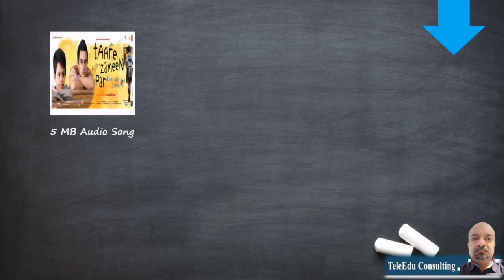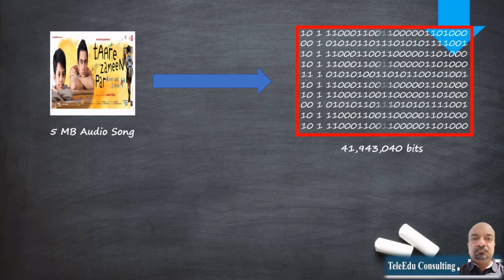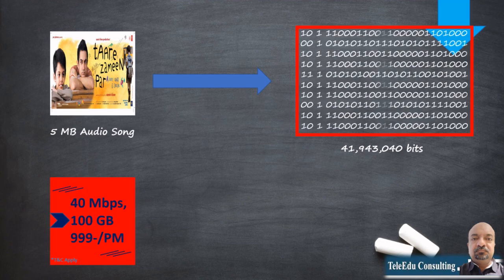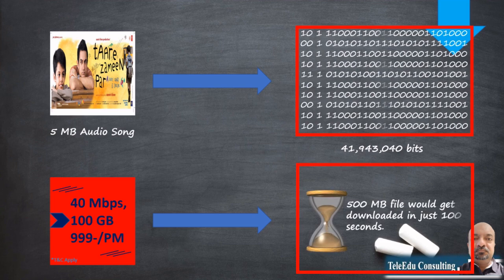Let us understand bits and bytes in terms of the data we engage with. An audio file of 5 megabytes would mean the song you listen to contains 41 million bits. Likewise, an internet plan of 40 megabits per second means the link from the subscriber's router to the internet can support 40 megabits of data transfer per second. To download a 500-megabit file it would take precisely 100 seconds, assuming the subscriber gets the average speed as per the plan. That's real quick.